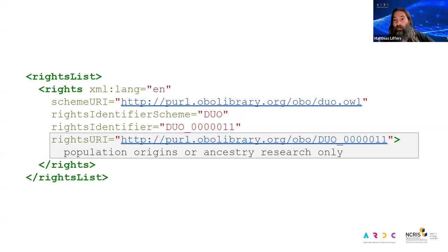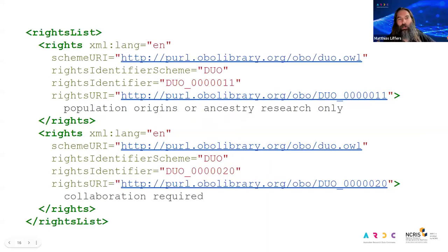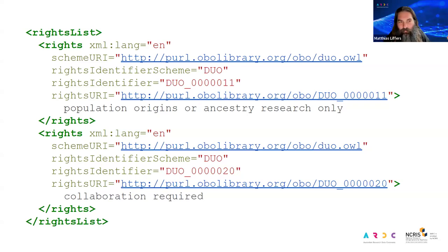One thing worth noting is that rights is a repeatable field. You can use the rights field zero times — it's optional — but you can also repeat it as many times as you like. So you could combine multiple terms to build the usage rights for a dataset. For example, I've referred to two terms here: this particular dataset is available only for population origins or ancestry research, and also, if you'd like to use this dataset, you will need to collaborate with the original creator. You can mix and match different DUO terms as you like.